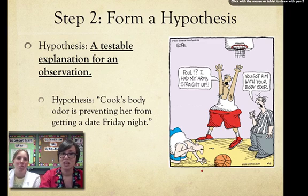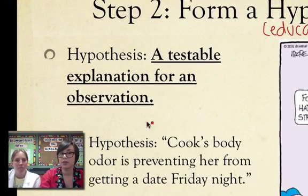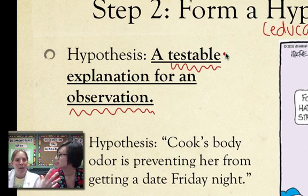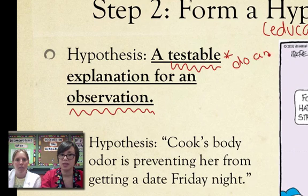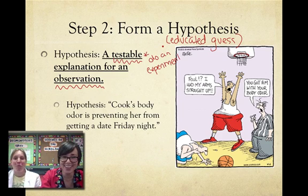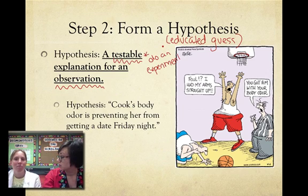Step two: you need to form a hypothesis, which is an educated guess — but it's even more than that. A hypothesis has to be based on observation, so you can't make one until you've seen something. It's basically an explanation for what you've observed, but the key is that explanation has to be testable — we have to be able to do an experiment. Ms. Hines came up with this hypothesis: Ms. Cook's body odor is preventing her from getting a date Friday night. Is that a testable explanation based on observation? Yes, we can make an experiment to test that.